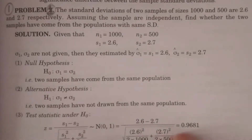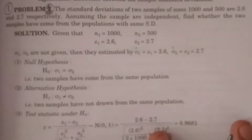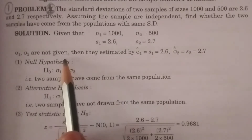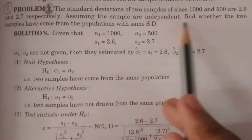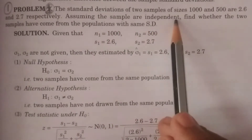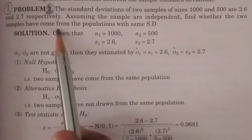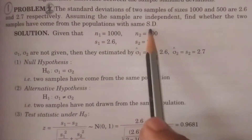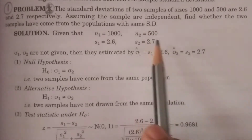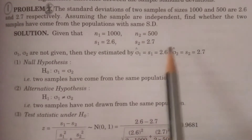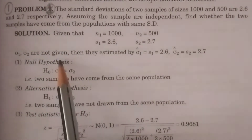Here we consider the most common case: sigma1 and sigma2 are not given, not known. Assuming that the samples are independent, find whether the two samples have come from populations with the same standard deviation. So sigma1 and sigma2 are not given, not specified.